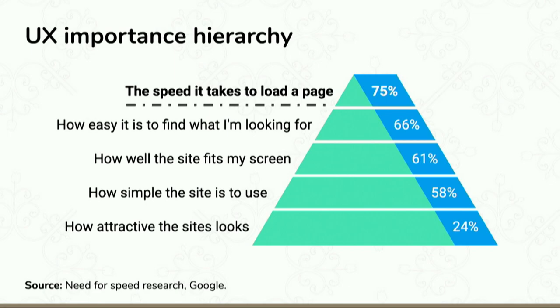This is the UX hierarchy. The most important thing for users is how long it takes for a page to load. Thereafter: how easy it is to find something, how well a site fits on screen, and how simple it is to use. All of those things are about perception — it's not just technical speed, it's the perception. How attractive a site looks is at the bottom, which is depressing because I studied graphic design 20 years ago. But if you ask users the most important thing on the mobile web, they say speed.